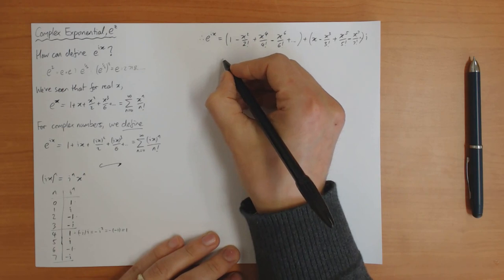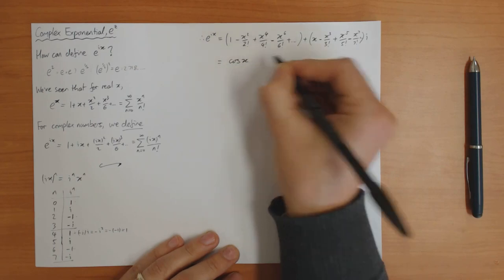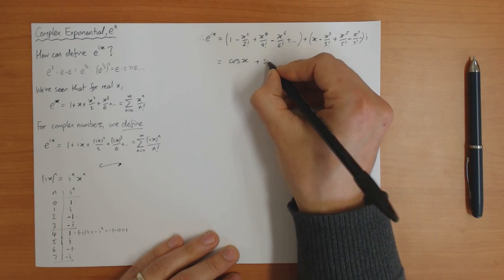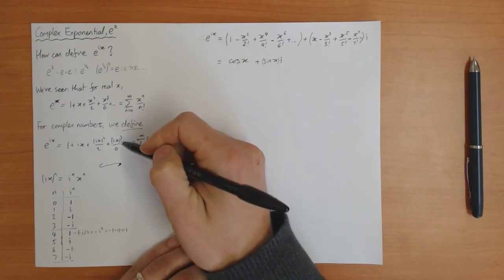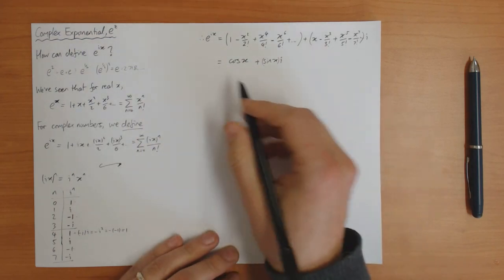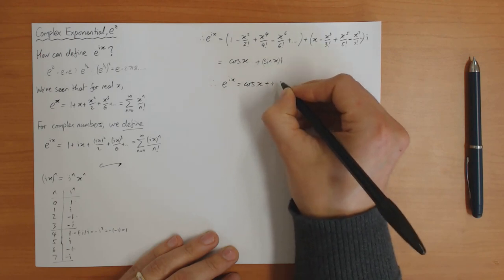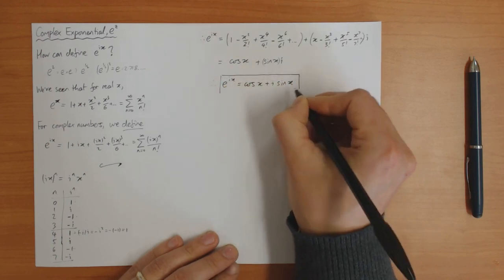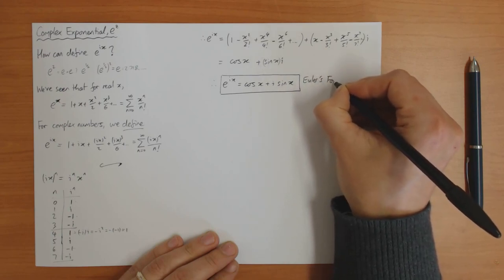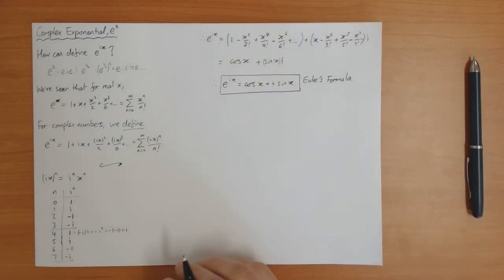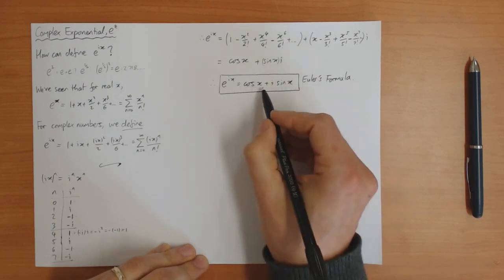Hopefully these series look familiar — the real part is just the Taylor series of cos x, and the imaginary part is just the Taylor series of sin x. So the conclusion of this definition of e to the ix — the complex exponential — is that e to the ix equals cos x plus i sine x. This is a very important result known as Euler's formula, and it relates the complex exponential to the cosine and sine functions for real x.